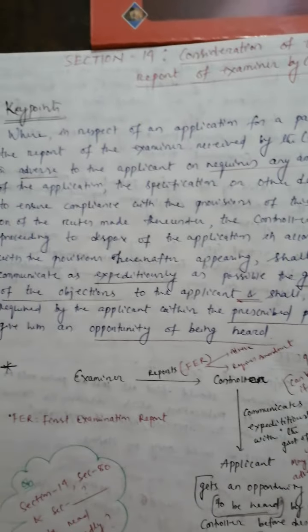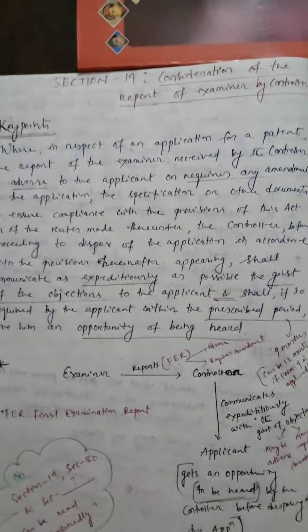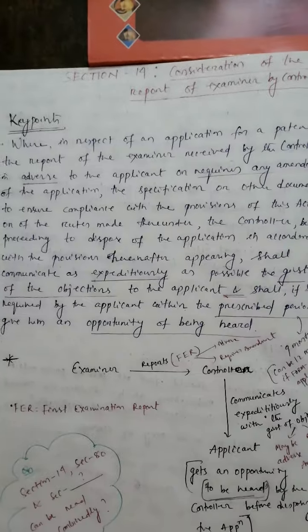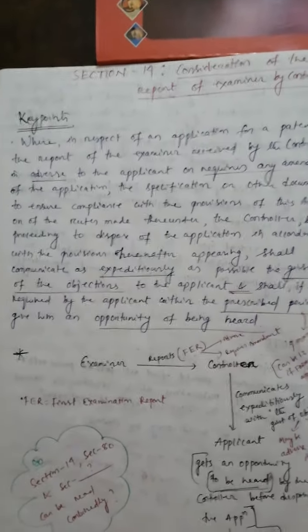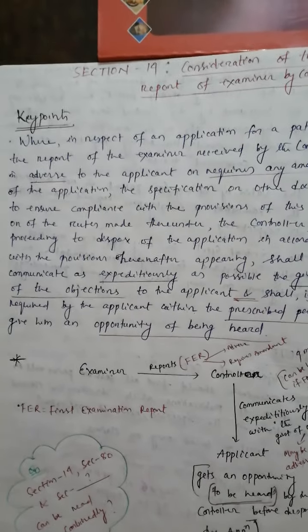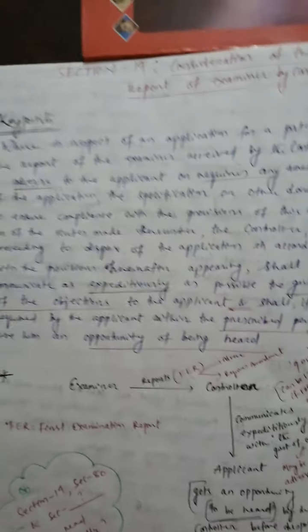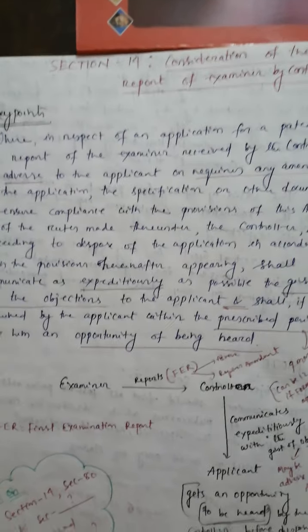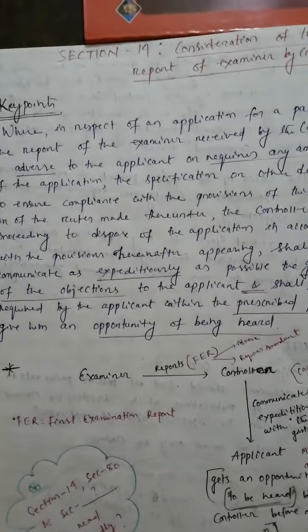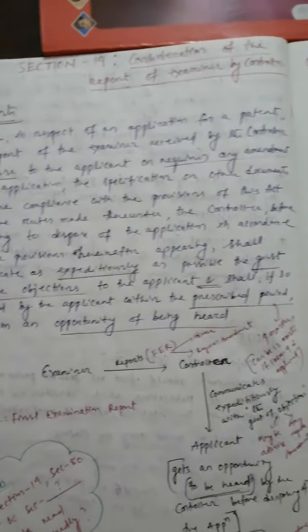It is only one subsection and I will try to explain this subsection through my key points. This subsection states: where in respect of an application for a patent, the report of the examiner received by the controller is adverse to the applicant or requires any amendment of the application, the specification or other documents to ensure compliance with the provisions of this Act or of the rules made thereunder.